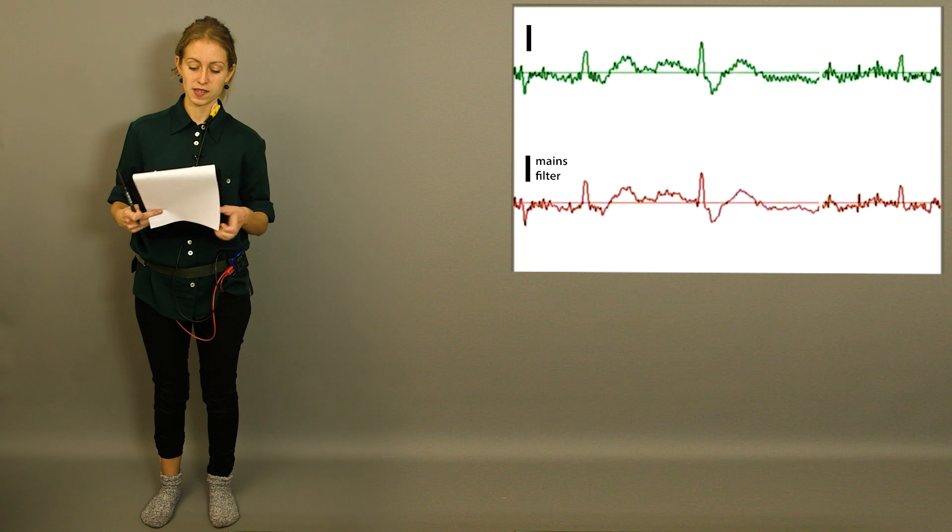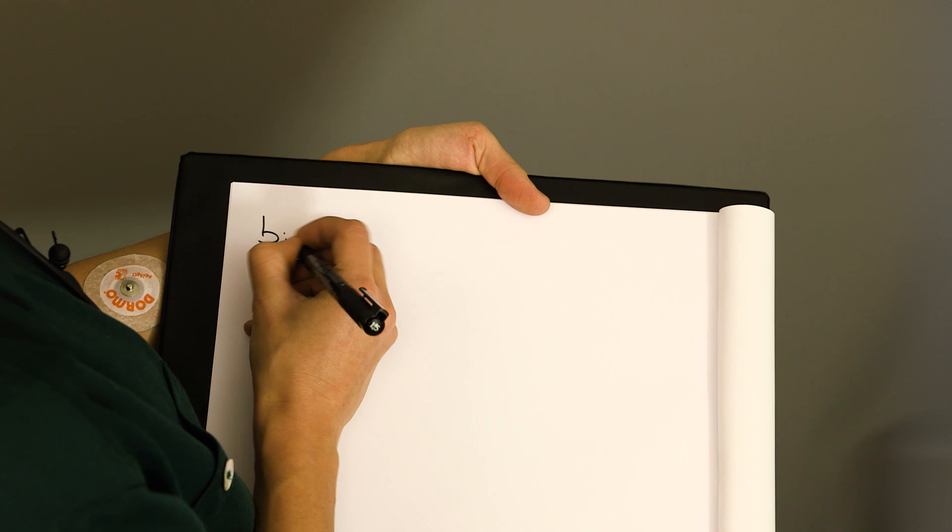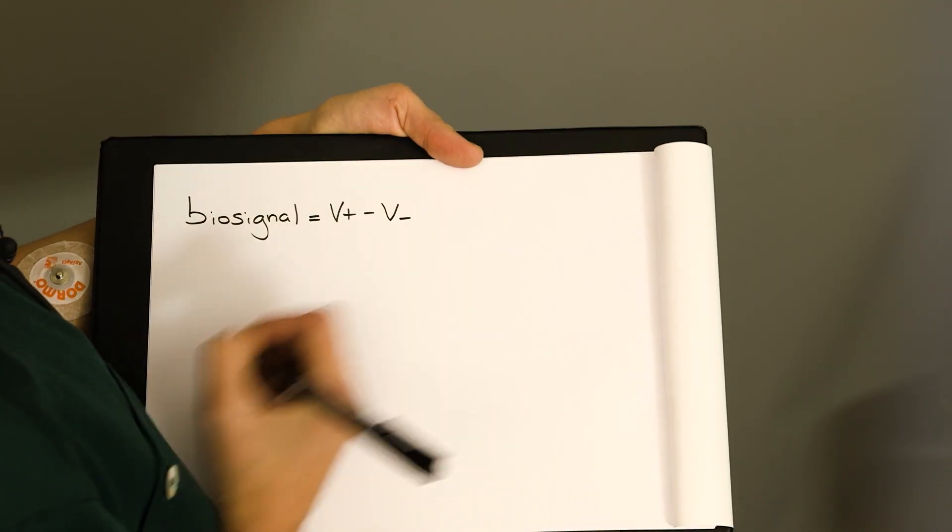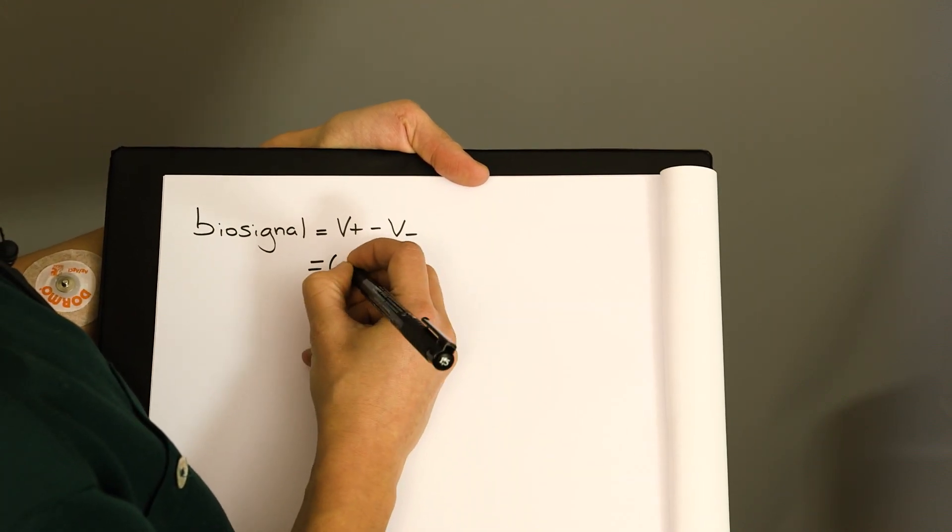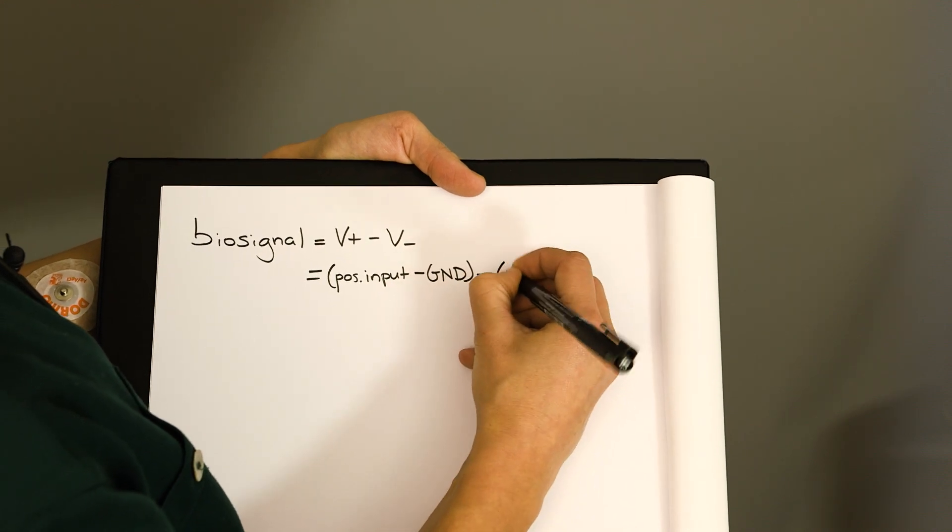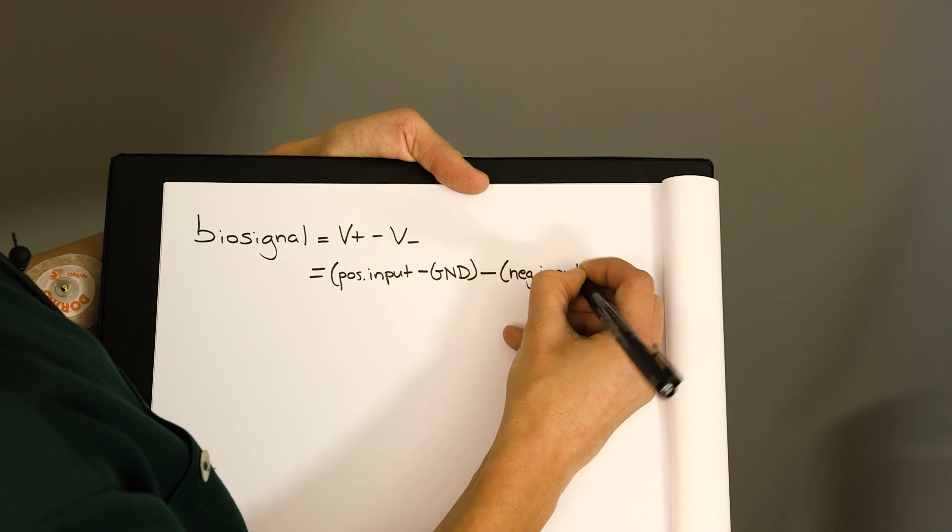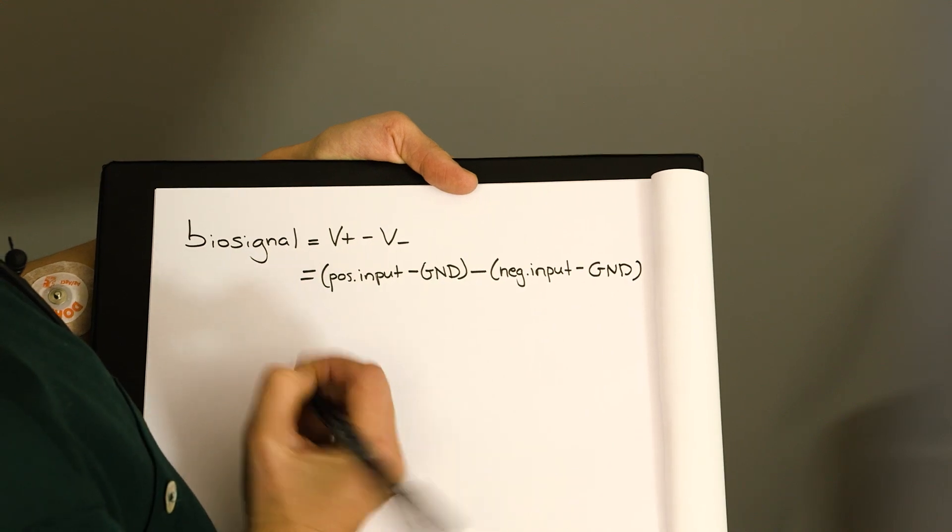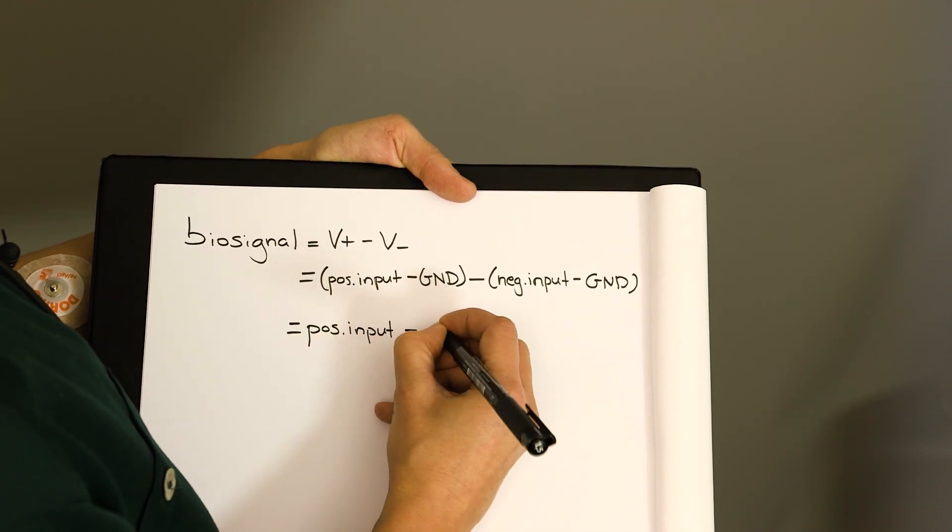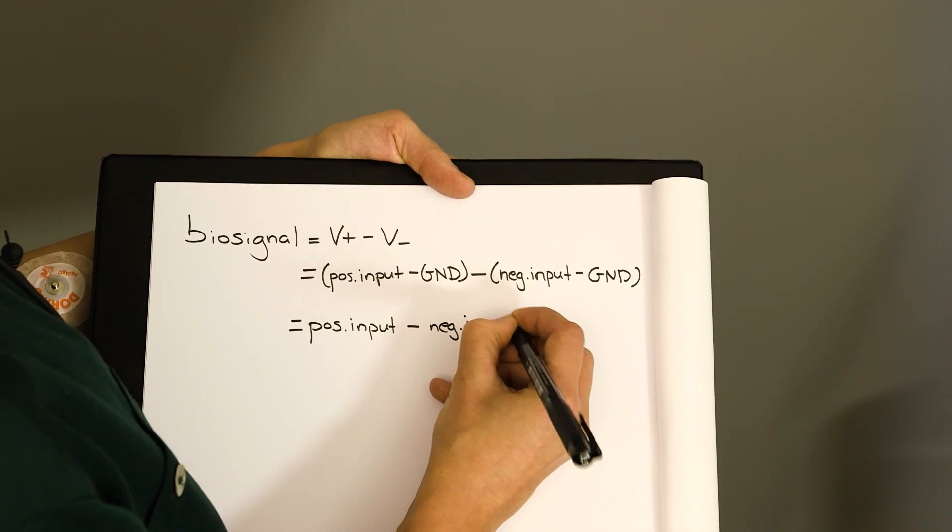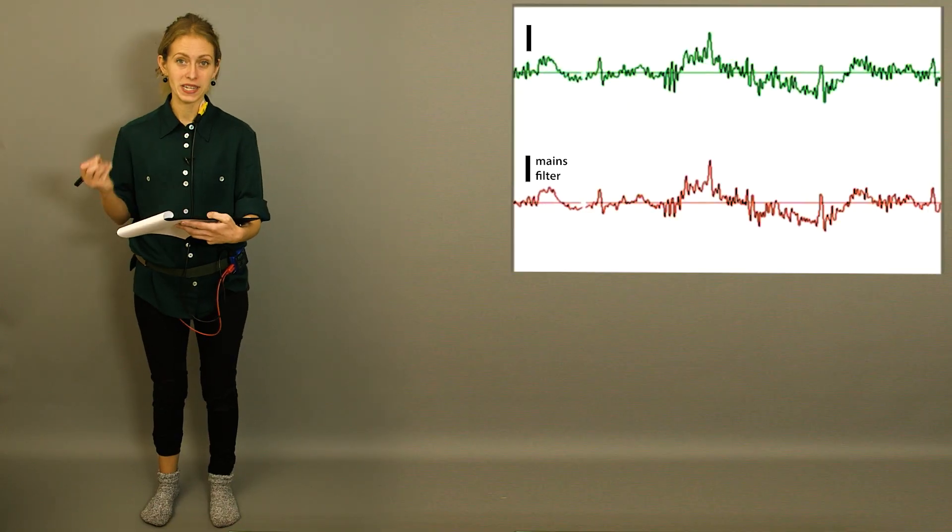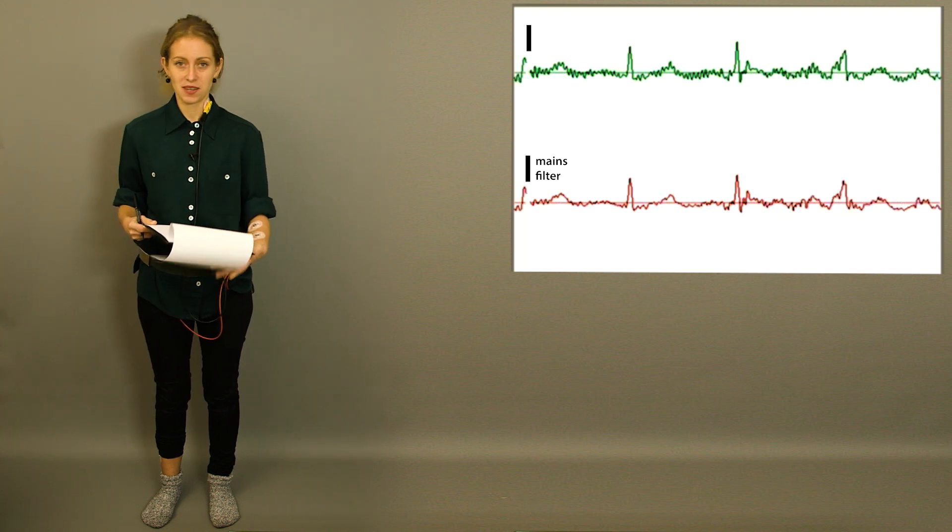If I take the first two equations and put them together then this is what I'll get. And here I see that the ground actually cancels out and that's why it doesn't matter where I put ground on my body.